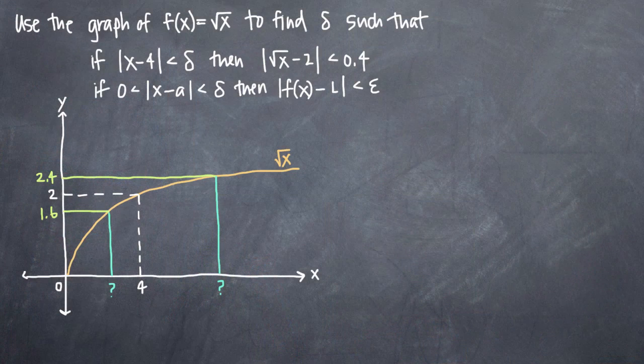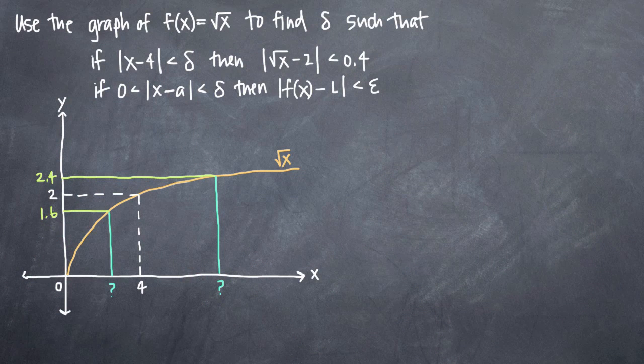In this particular problem, we've been asked to use the graph of f(x) equals the square root of x to find delta, such that if the absolute value of x minus 4 is less than delta, then the absolute value of the square root of x minus 2 is less than 0.4.